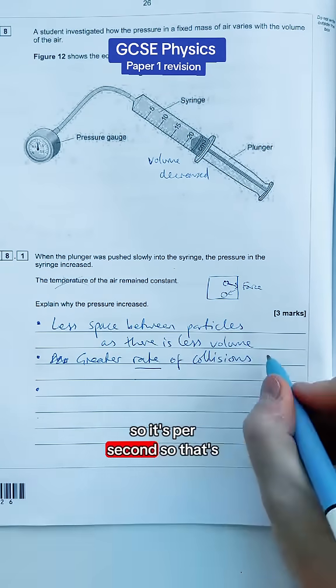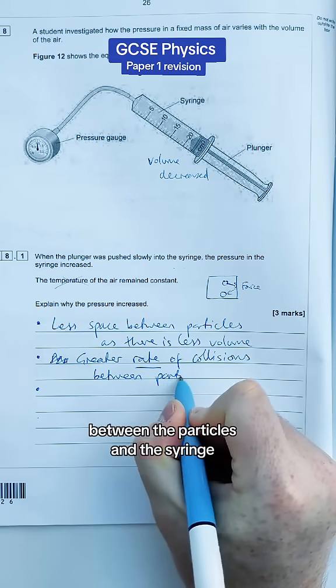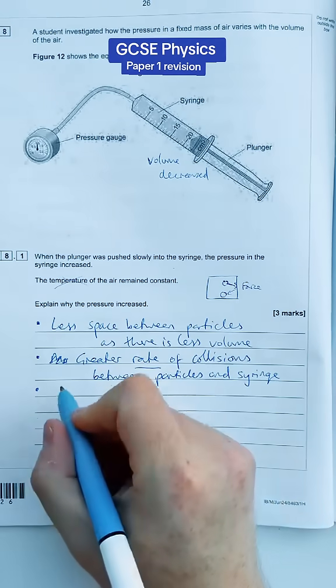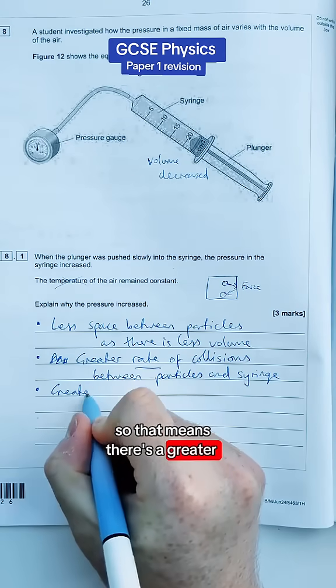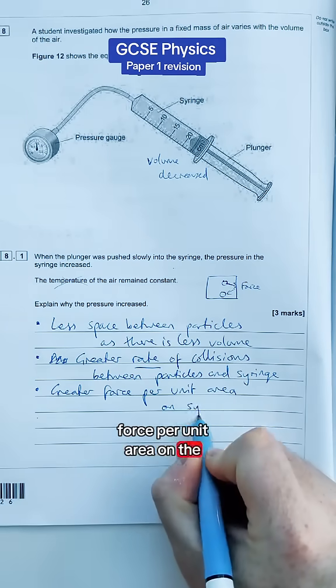So that's between the particles and the syringe, and that hasn't explained what pressure yet. Pressure we talked about, we've got to mention force, so that means there's a greater force per unit area on the syringe.